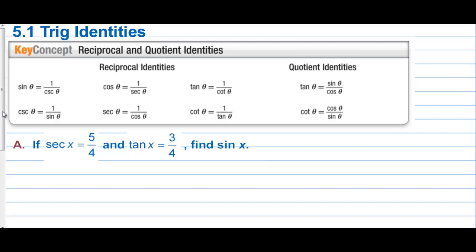Section 5.1, trig identities. We have the reciprocal and quotient identities. For example, sine is a reciprocal of cosecant, and cosecant is a reciprocal of the sine. And then we have the reciprocal functions for the other four. Here we have tangent of theta is sine over cosine of theta, and cotangent is the same as cosine over sine of theta.